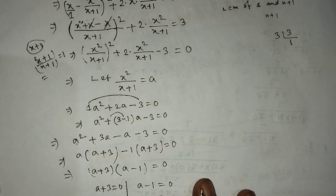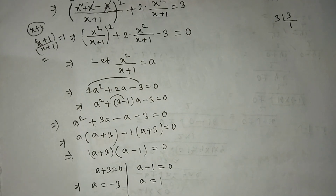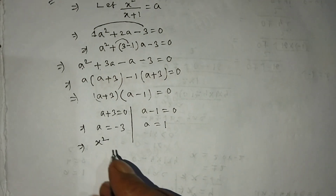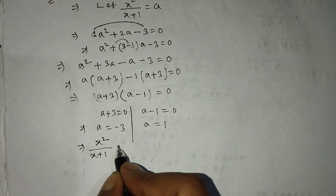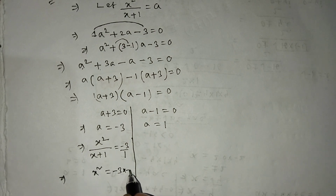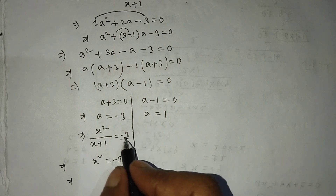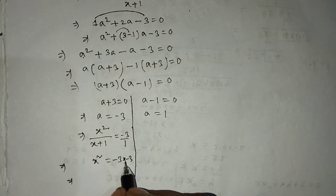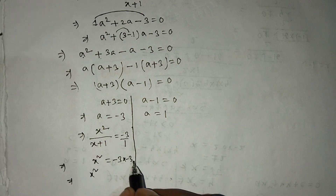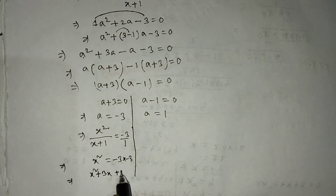We need to find the value of x, so we substitute back. For A equals minus 3: x squared over (x plus 1) equals minus 3. By cross multiplication, x squared equals minus 3(x plus 1), which gives x squared equals minus 3x minus 3. Transposing to the left side: x squared plus 3x plus 3 is equal to 0.